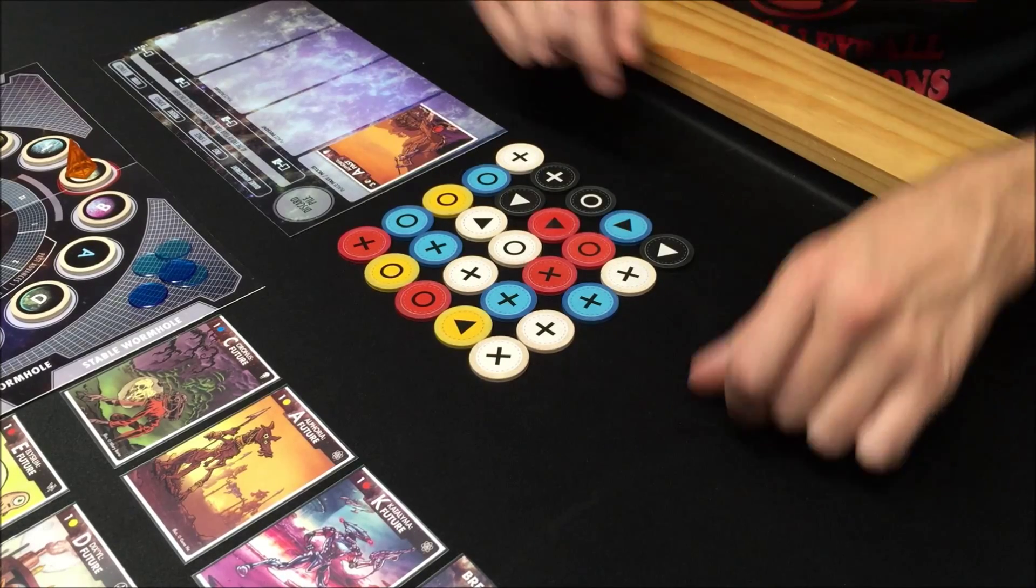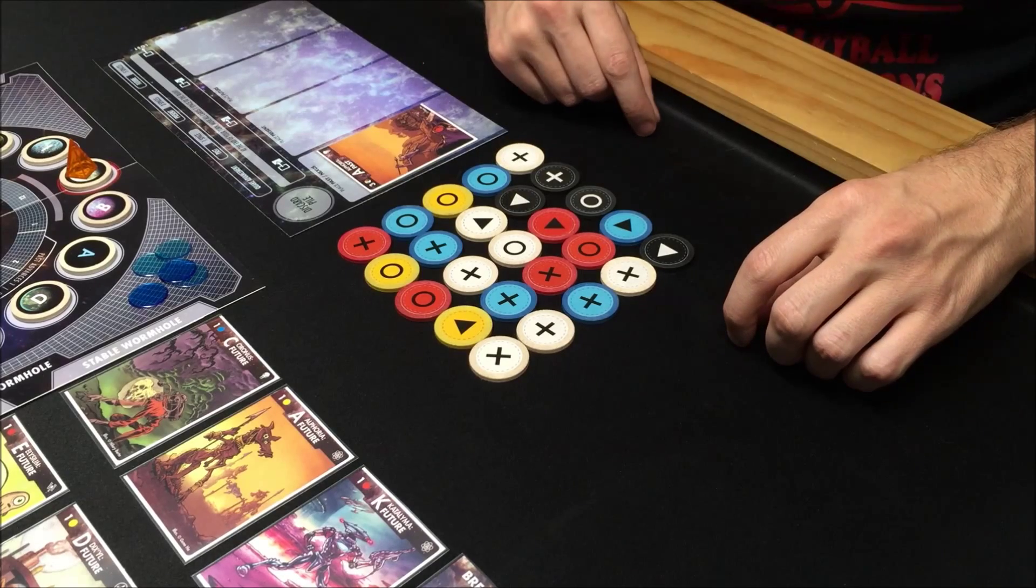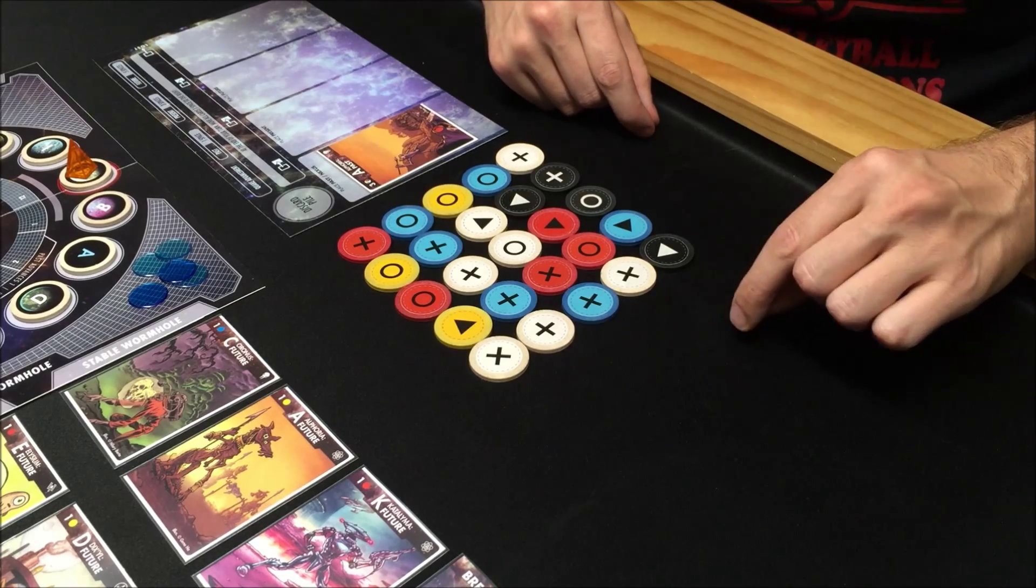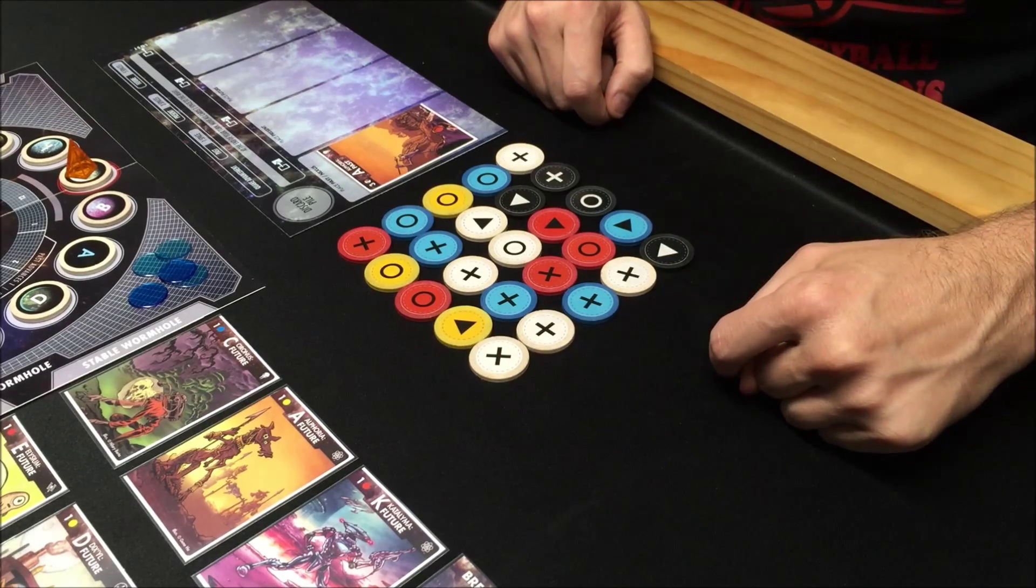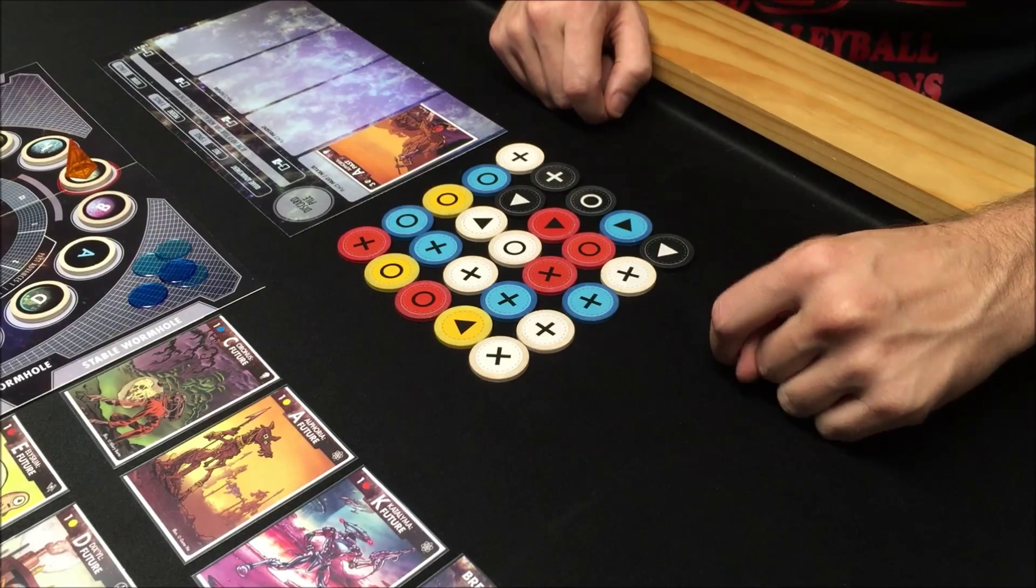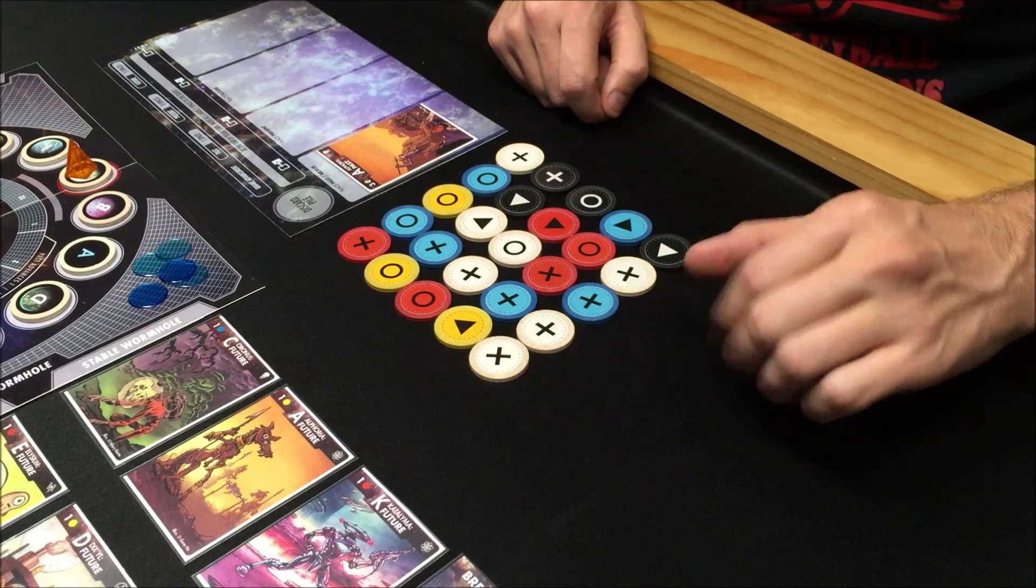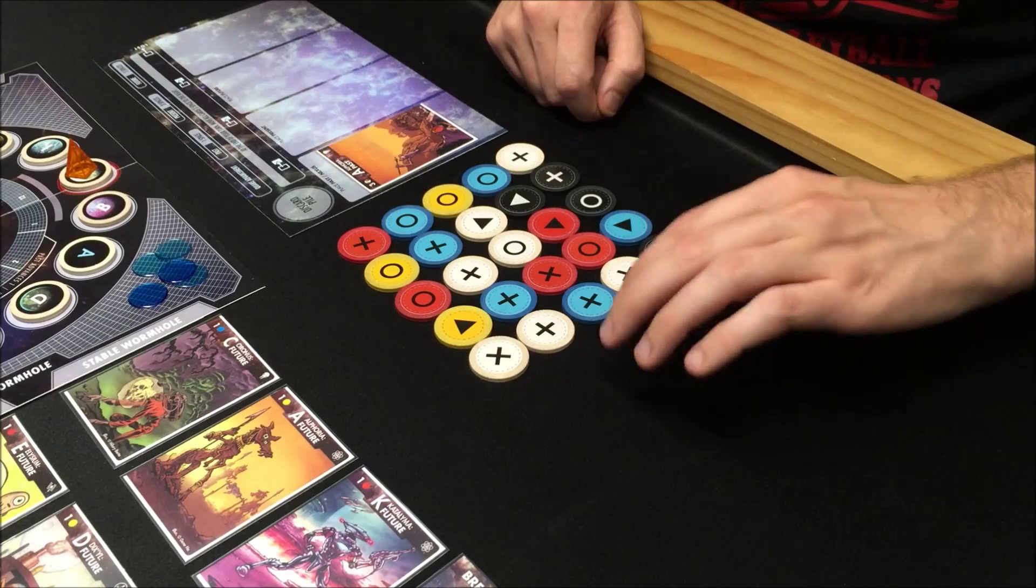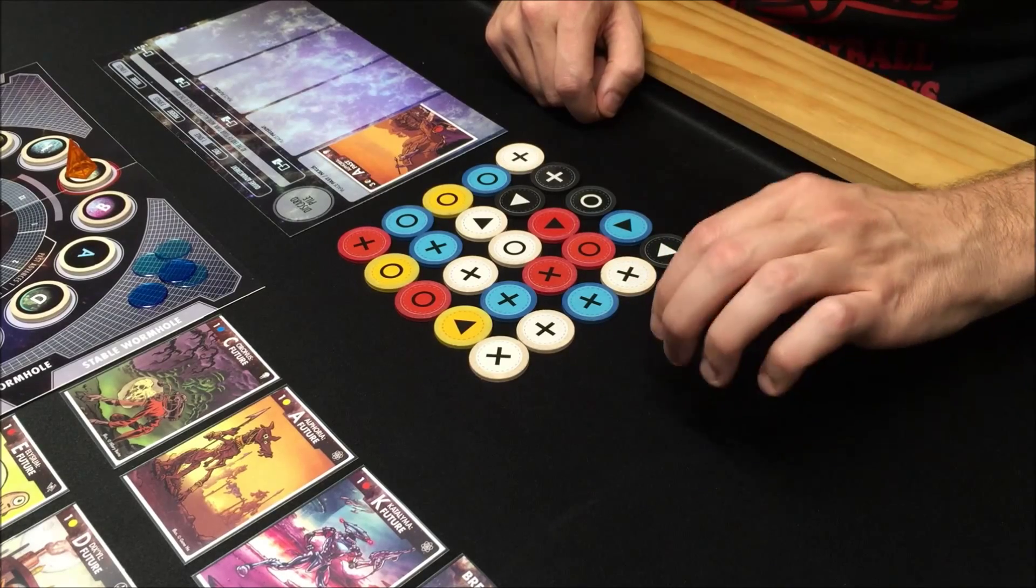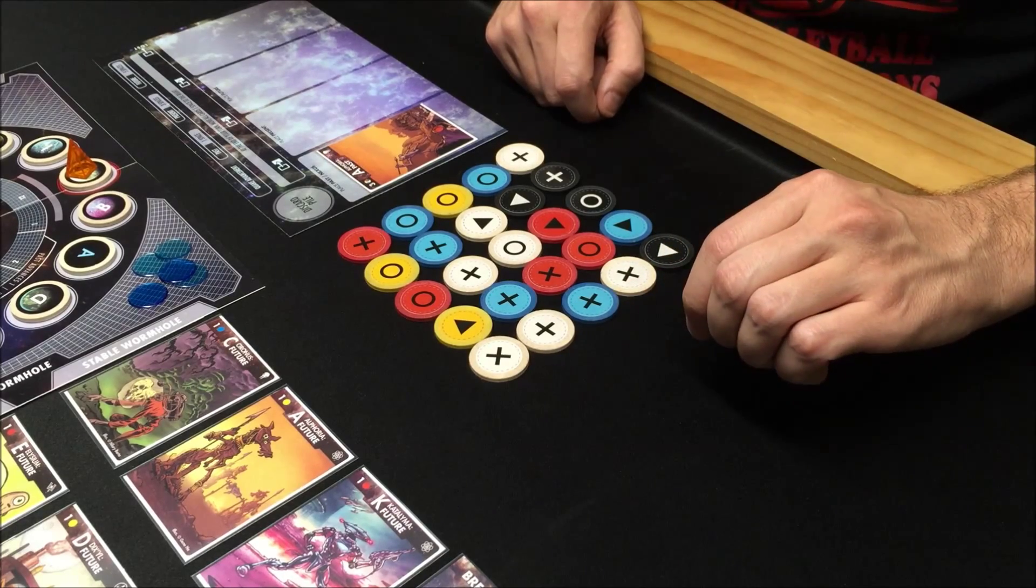On your turn, what you're trying to do is create time strands of four or five matching colors in a row or a column. Whenever you make a four or a five in a color, they immediately are removed from your matrix.